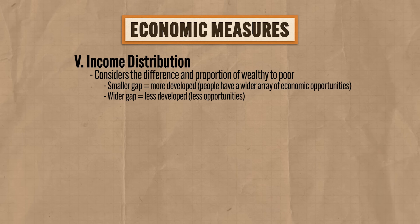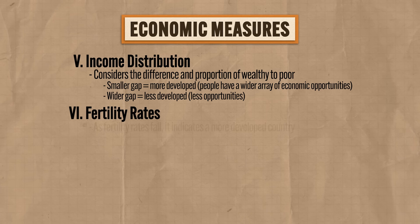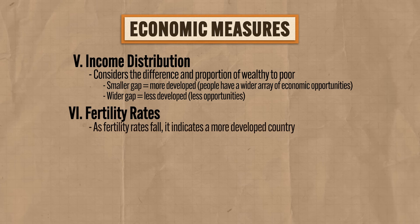The sixth measure of economic development is a country's fertility rates. In general, as fertility rates fall, it indicates a more developed country. As women have more access to education, they tend to have fewer babies and vice versa. Countries with high fertility rates, like many nations in sub-Saharan Africa, indicate less opportunities for women and thus are considered less developed.